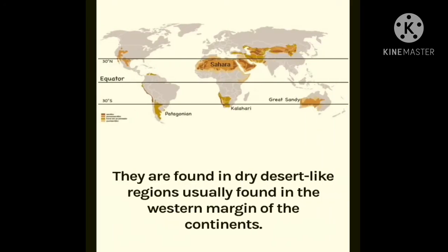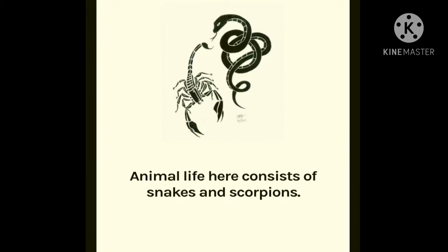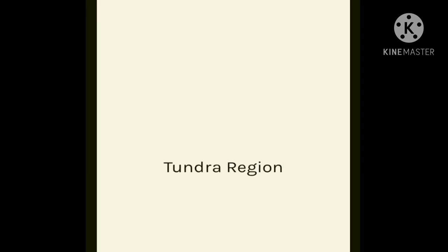The next type is thorny bushes. They are found in dry, desert-like regions, usually found in the western margins of the continents. The vegetation cover is scarce here due to lack of rain and high temperatures. Animal life here consists of snakes and scorpions.